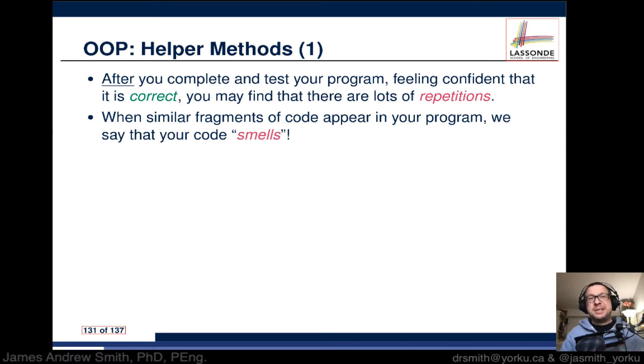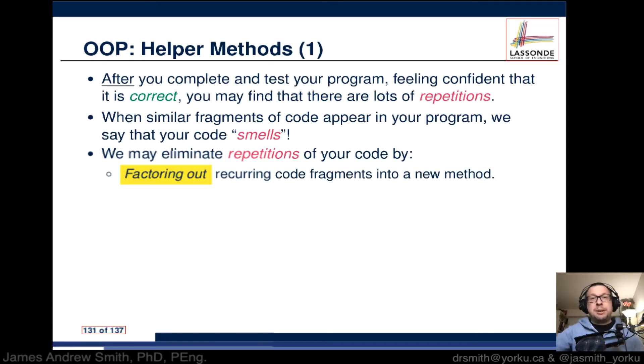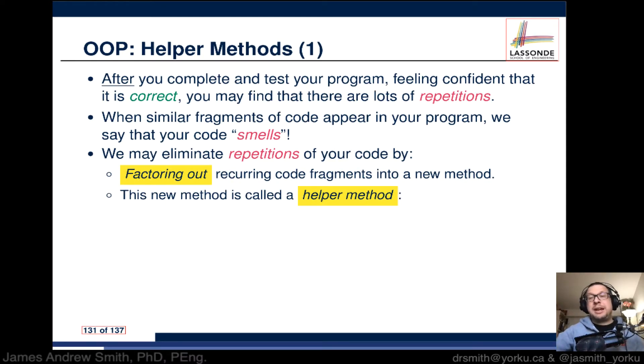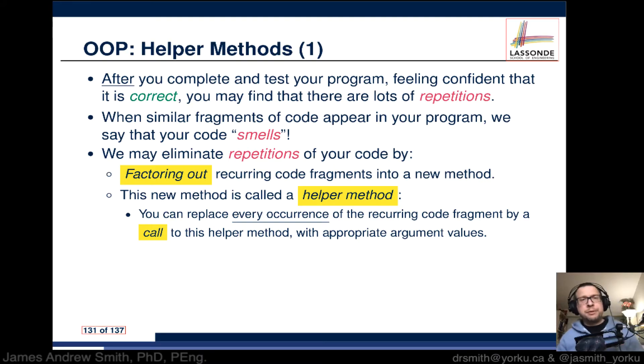We eliminate these repetitions by factoring out recurring code fragments into a new method. We call this a helper method. You can replace every occurrence of the recurring code fragment by a call to this helper method with appropriate argument values.